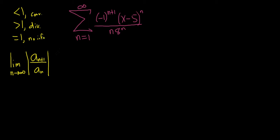In this problem we want the series to converge, so what we do is work out this limit and then purposely set it less than 1, because we're trying to force convergence. This is equal to the limit as n approaches infinity of the absolute value. The first step is to figure out a_(n+1), so we replace all of the n's with n+1's.